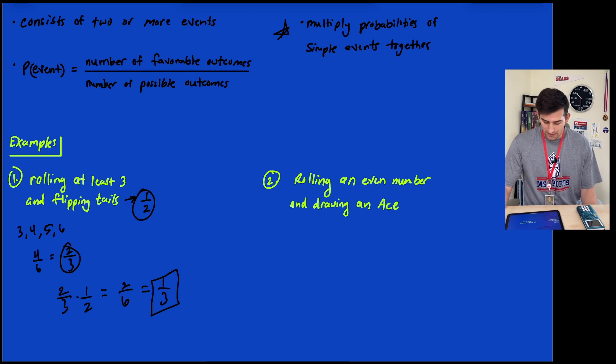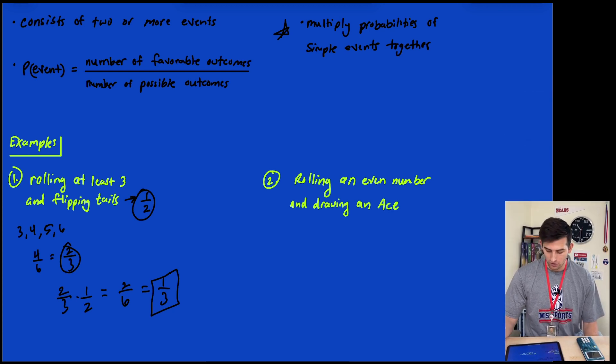Number two: rolling an even number and drawing an ace. With a die, the even numbers are 2, 4, and 6. There are three of them out of six possible outcomes, so that equals 1/2. Basically, we have a 50-50 chance of rolling an even number.